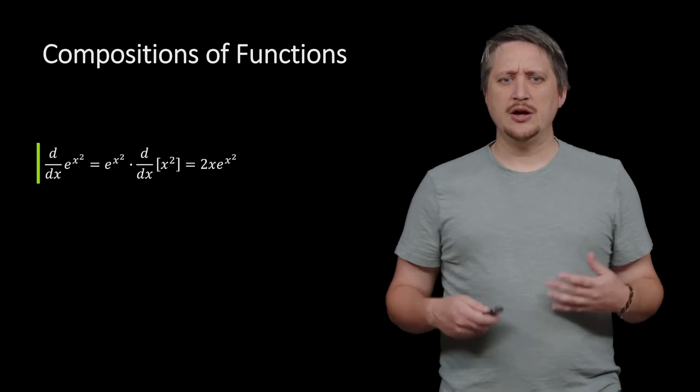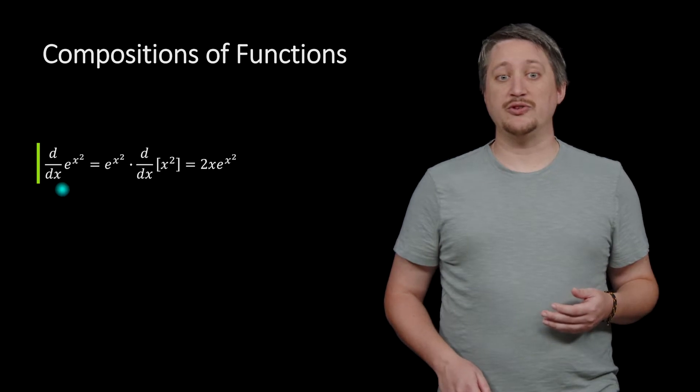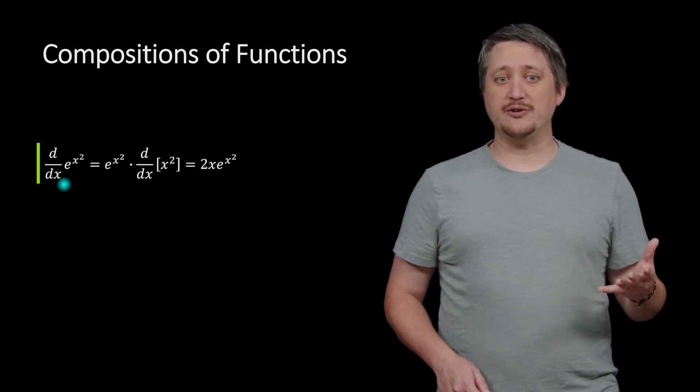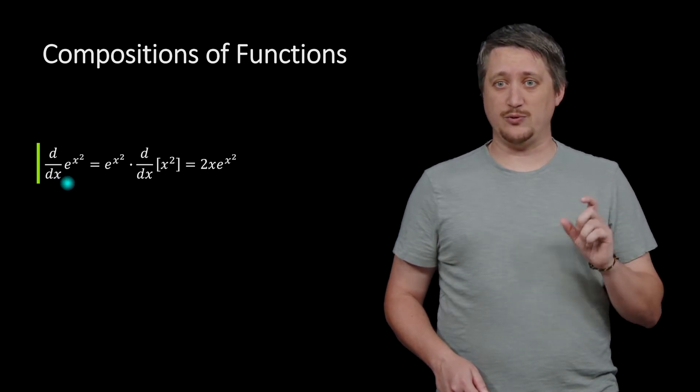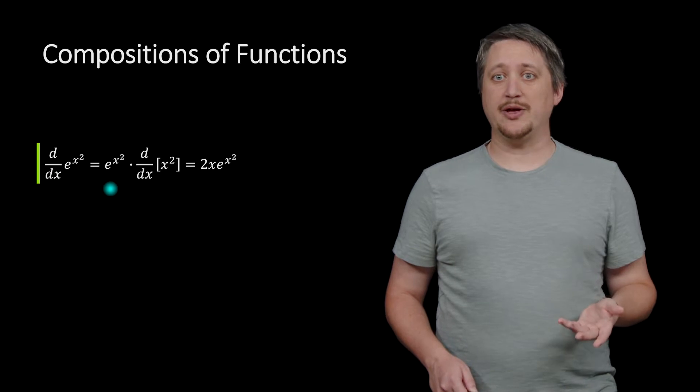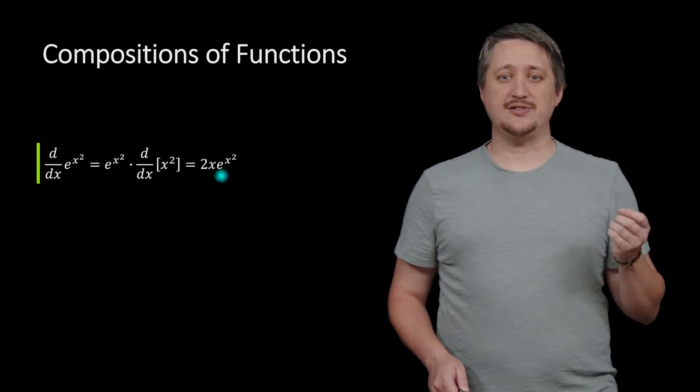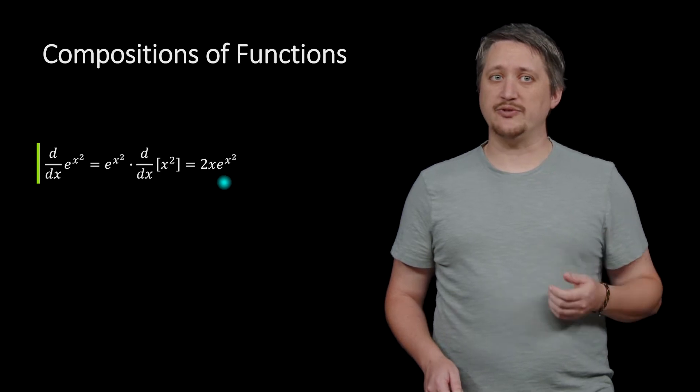All right, so let's start with an example. Let's say we're doing the derivative of e to the x squared. Again, we would do the derivative of e to the x squared as if it were just e to a thing, which is itself, but then we would multiply by the derivative of the inside. So we'd end up with this 2x e to the x squared.